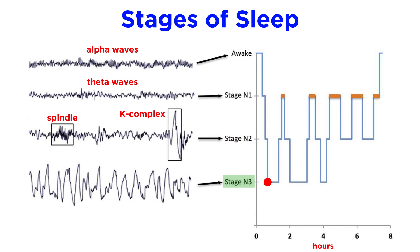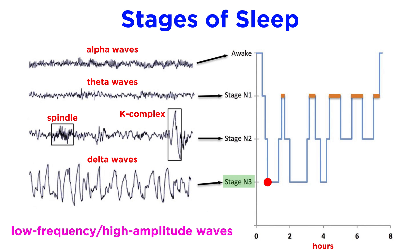Stage three, or N3, involves a transition to delta waves, the largest and slowest waves, and these correspond to deeper sleep. This is accompanied by lower frequency and higher amplitude brainwaves.